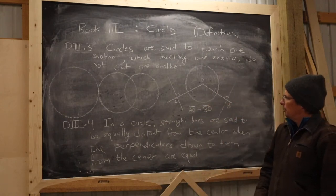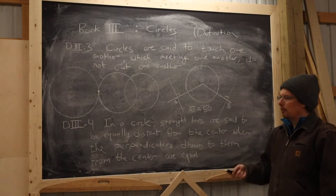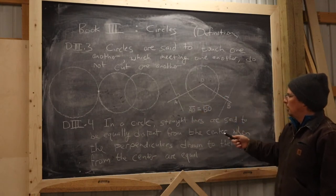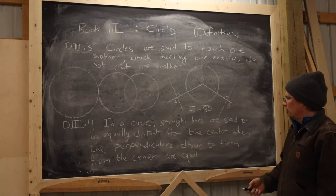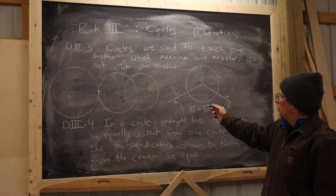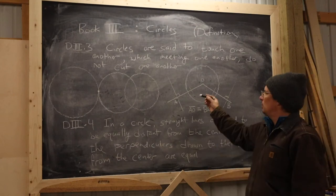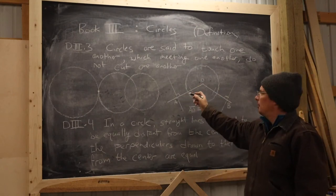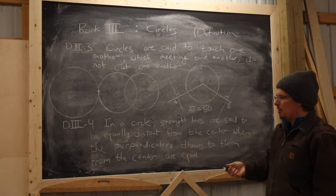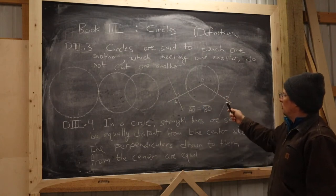Definition four talks about distances between lines and the center of a circle. In a circle, straight lines are said to be equally distant from the center when we draw a perpendicular from the center of the circle to each of the lines. If those perpendiculars happen to be equal in length, then the two lines are equally distant from the center. This is a construction we can do — we learned how to drop a perpendicular from a given point in Book 1.